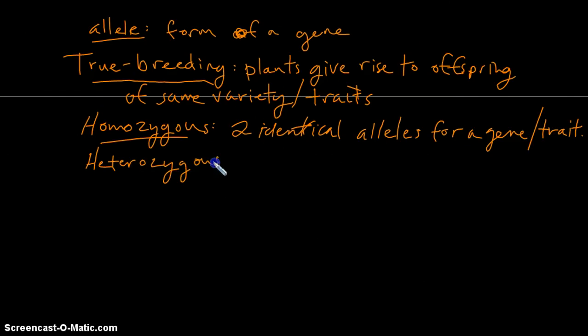If their alleles vary for a specific gene, then they are said to be heterozygous, hetero meaning different. So then they have two different alleles for a gene or trait.